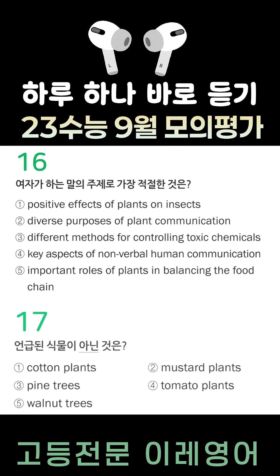Third, some plants communicate with other plant species to scare insects away. For example, tomato plants use low vibrating sounds to attract other plants that produce a smell which is unpleasant to insects.